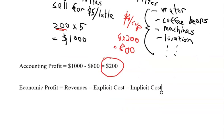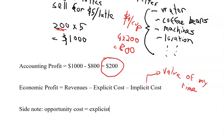Now implicit cost is going to be the value of my time. If you remember from a previous video, we have talked about opportunity costs. So basically this is going to be a side note: opportunity cost equals explicit cost plus implicit cost. So basically economic profit is revenues minus my opportunity cost. I have a video on opportunity cost in my channel. If you have forgotten what opportunity cost is, please go and watch that video.